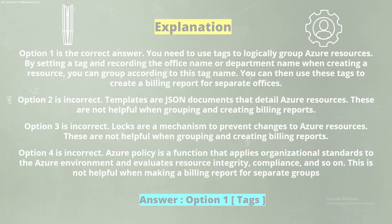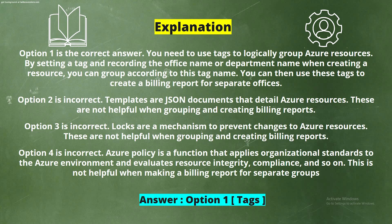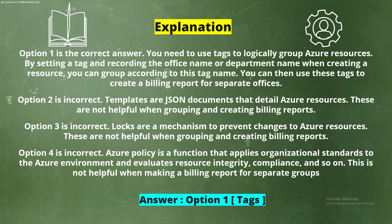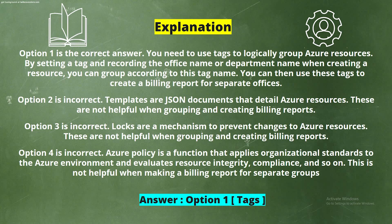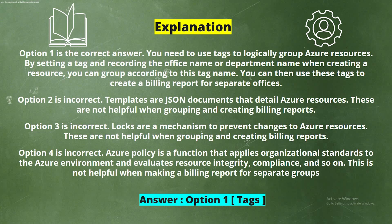Explanation: Option 1 is correct. You need to use tags to logically group Azure resources. By setting a tag and recording the office name or department name when creating a resource, you can group according to this tag name. You can then use these tags to create a billing report for separate offices.